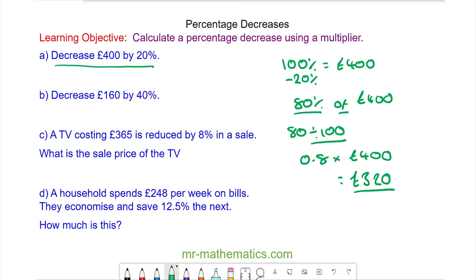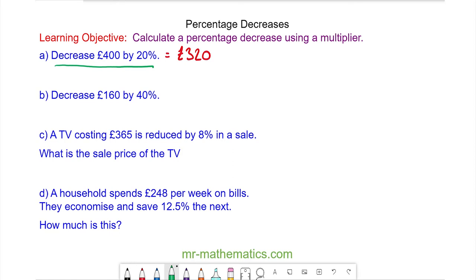For our next question we're going to decrease 160 pounds by 40 percent. So again we need to understand that 100 percent is the original value of 160 pounds, and we're going to take away 40 percent because it is a decrease, so we're left with 60 percent of 160 pounds.